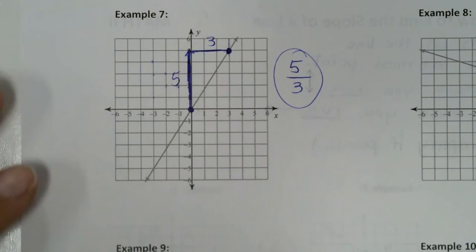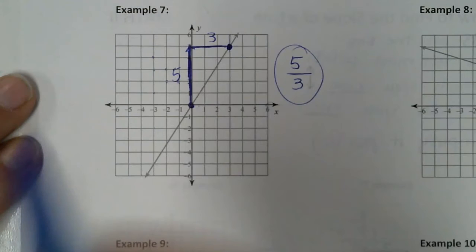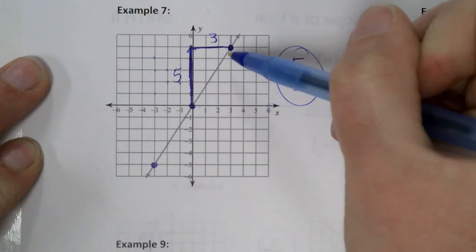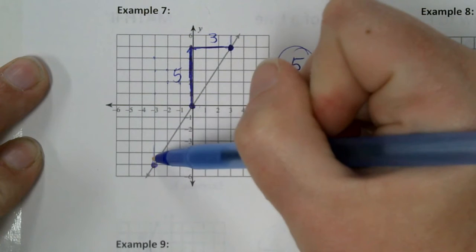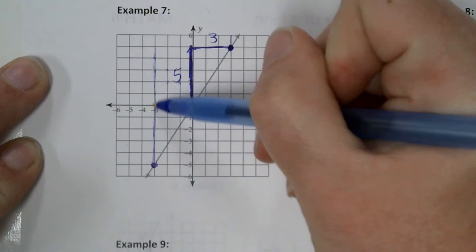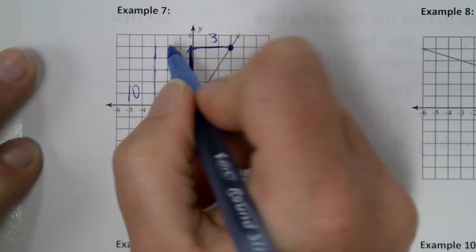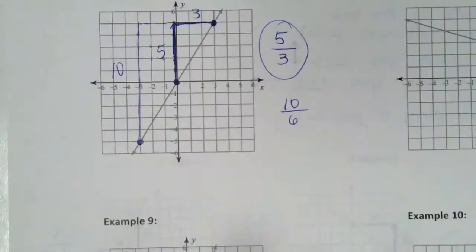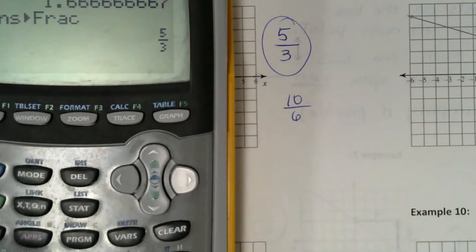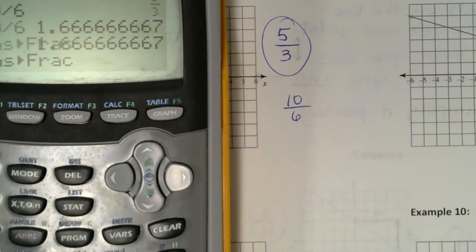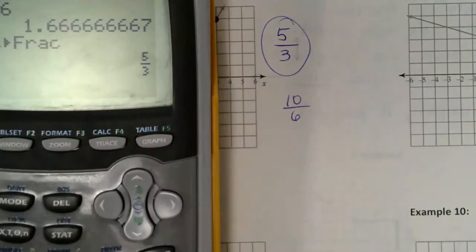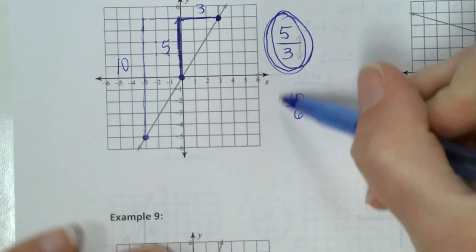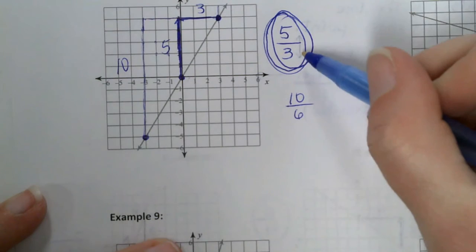Now real quickly, before I go any further, I want you to see what would happen if I didn't see this point and instead used a different one. If I use that point and this point, how far am I rising? Ten. And then I'd be running six. So I would do ten over six. Well, guess what ten over six reduces to? Five over three. Ten divided by six — math, enter, enter — same thing. So that is why you have to make sure you reduce. Because if you get ten over six, technically it's not wrong, but it's not reduced.